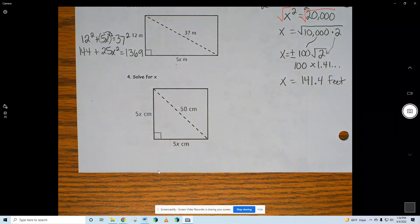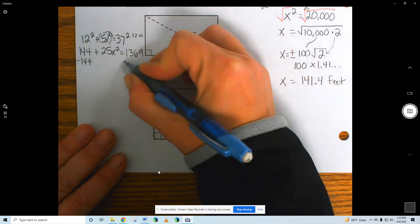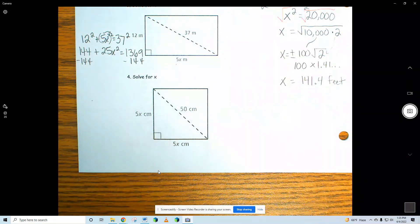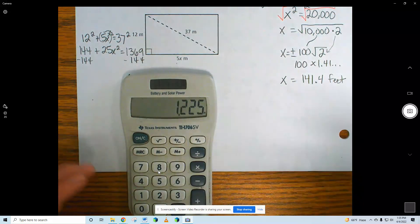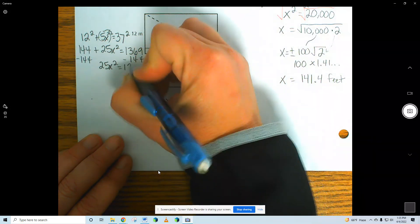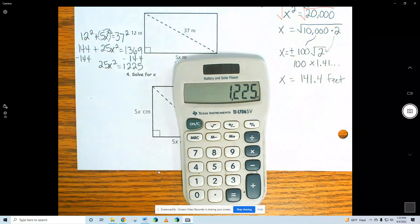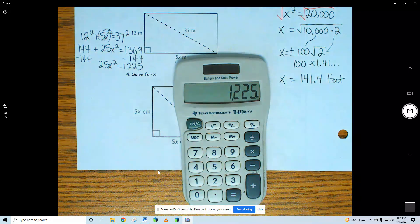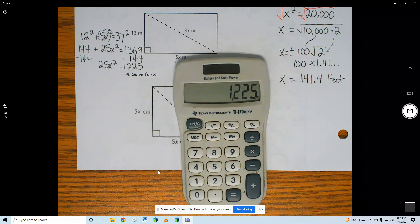This is like our front side. What should I move first? The 144 or the 25? Subtract 144. 1,369 minus 144 is 1225. 25x squared equals 1,225. Last step. Divide by 25. 49. Nice. It comes out really good.